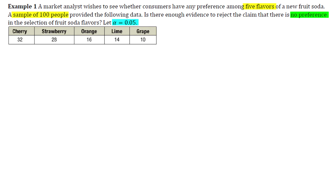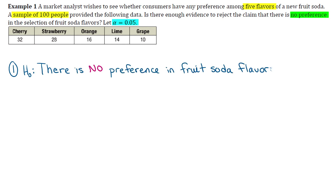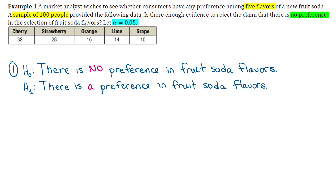We'll use the p-value method for this entire section. Step one is stating our hypotheses. The null hypothesis is that there is no preference in fruit soda flavors. The alternative is that there is a preference in fruit soda flavors. Looking at the question, the claim is that there is no preference, so the null hypothesis is the claim here. No matter what, the null always says no preference and the alternative always says there is a preference.